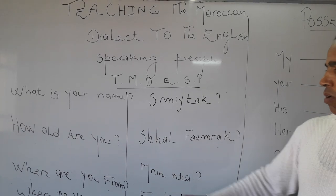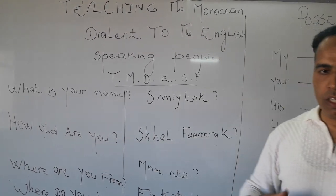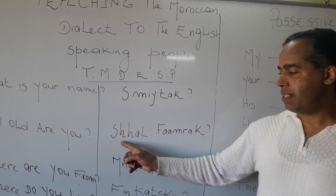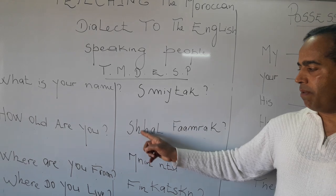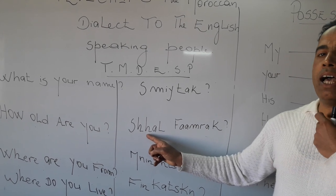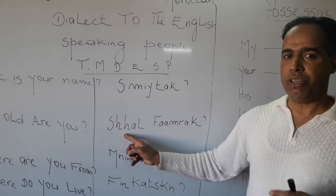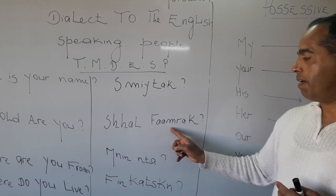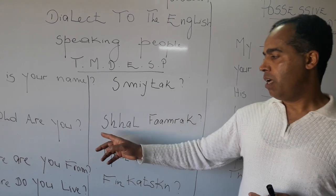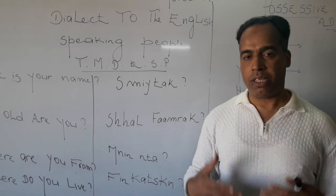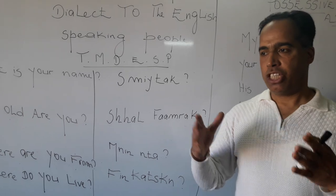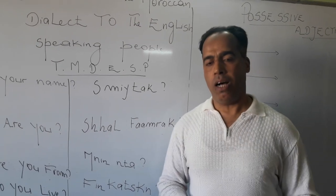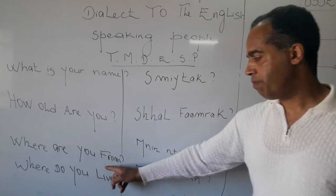When we say 'How old are you?' in English, the Moroccan dialect phrase is 'Shal fa amalak.' Pay attention here because this word is difficult to pronounce for English speakers. Repeat it: 'Shal fa amalak' — that means 'How old are you?'